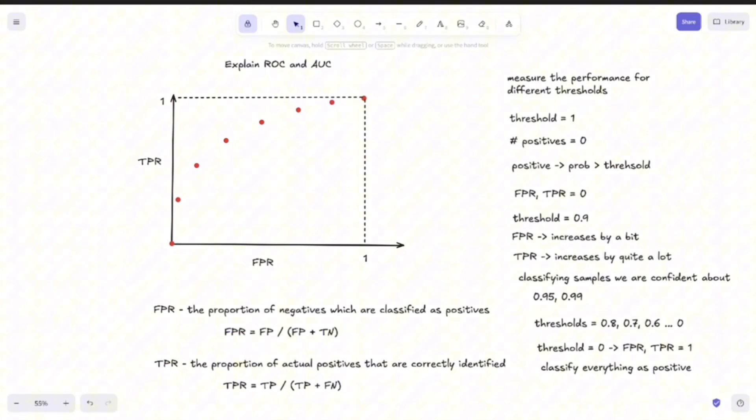And now we can move to the next part and explain the area under the curve. Which curve, you may ask? Well, the area under this curve here that we have obtained by measuring the performance of our model using different thresholds. So this is the area under the curve.